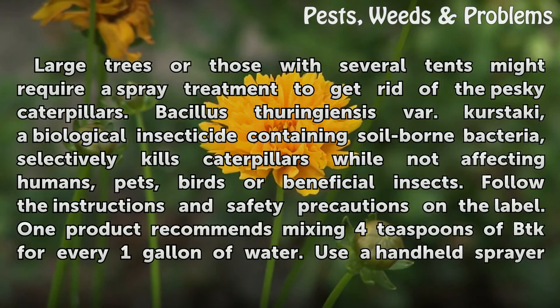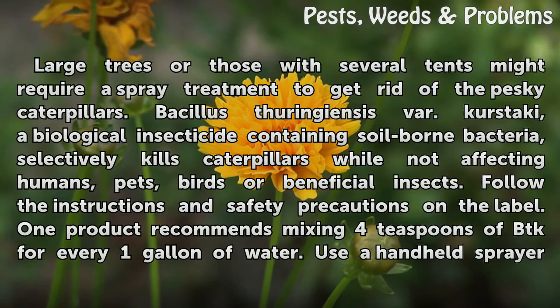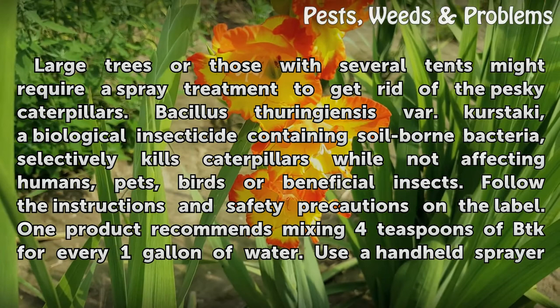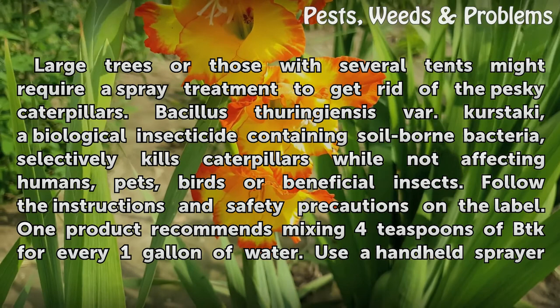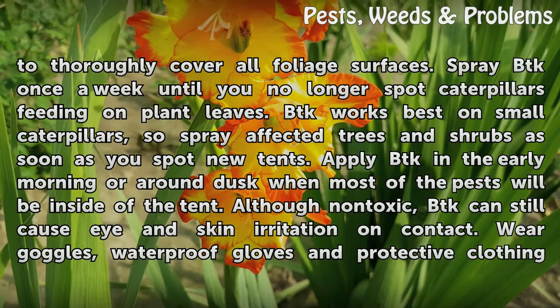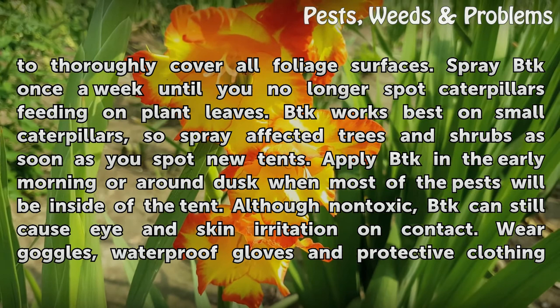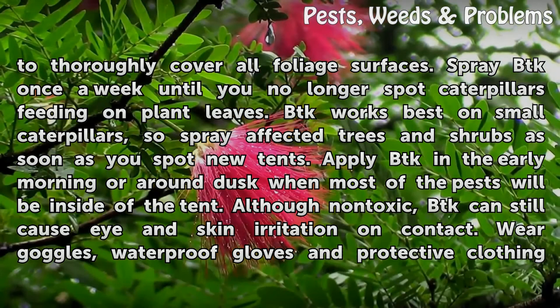Large trees or those with several tents might require a spray treatment. Bacillus thuringiensis var. kurstaki (BTK), a biological insecticide containing soil-borne bacteria, selectively kills caterpillars while not affecting humans, pets, birds, or beneficial insects. Follow label instructions; one product recommends mixing four teaspoons of BTK per one gallon of water. Use a handheld sprayer to thoroughly cover all foliage surfaces, spraying BTK once a week until you no longer spot caterpillars feeding.